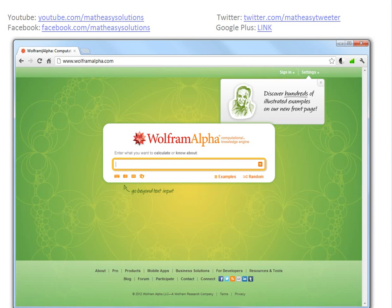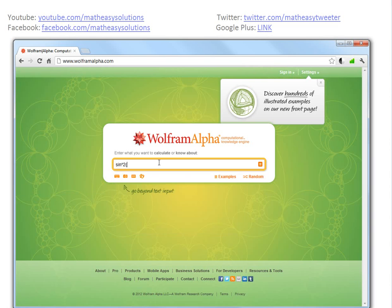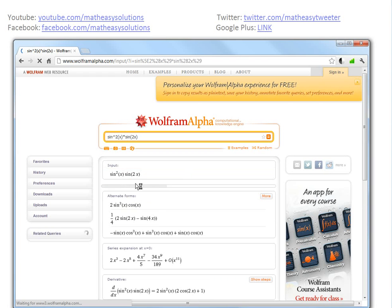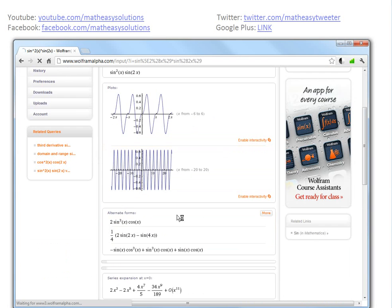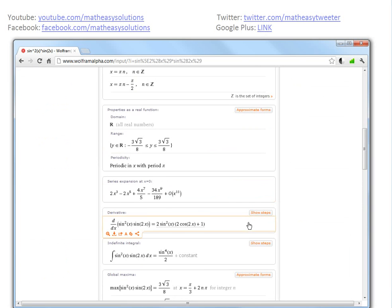If I just go to WolframAlpha.com and basically type in any kind of function, we can even go sine squared x times sine 2x. When you type it in, it gives a bunch of info on it. There's the input, different forms, different identities for it. But what I'm interested in actually is integrals. Because I haven't seen one that would do step-by-step for free, but there's right here, you can just click on show steps.